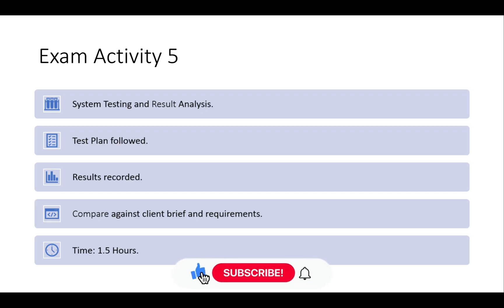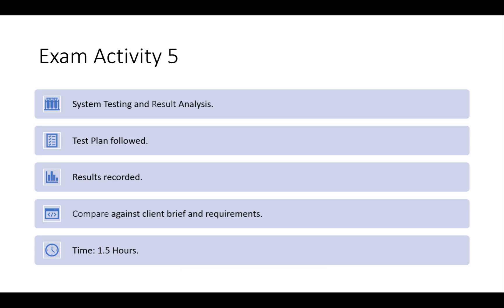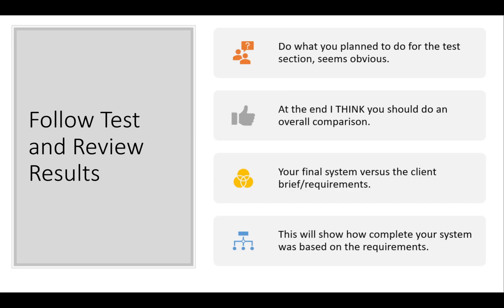Welcome back. Activity 5 is system testing and result analysis. The test plan needs to be followed to some degree — you can obviously go back and make changes. You have 12 hours to do the entire exam, so if you think that in Activity 2 you made a few mistakes or wanted to add or remove stuff, go back and change what you need. Results need to be recorded and compared against the client brief and requirements. The time for this should roughly be one and a half hours.